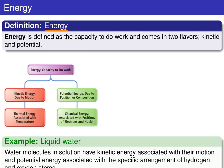Energy is defined as the capacity to do work, and it comes in two flavors: kinetic and potential. Those of you that have taken a previous physics course will probably find these terms familiar. Kinetic energy is the energy due to motion, and potential energy is the energy due to composition or position. Energy due to motion is intimately tied in with the concept of temperature, which we'll explore later. Potential energy due to position or composition is a sort of chemical energy associated with the positions of electrons and nuclei.